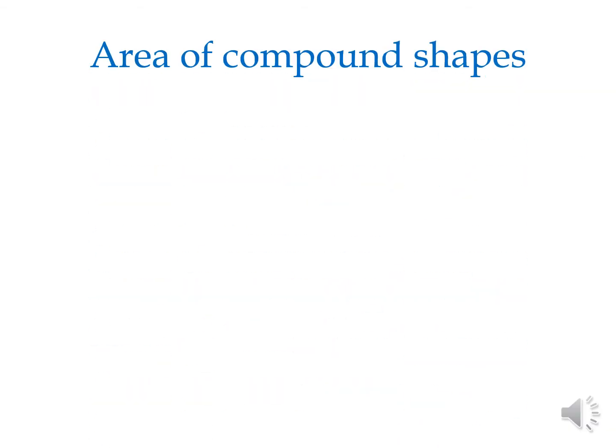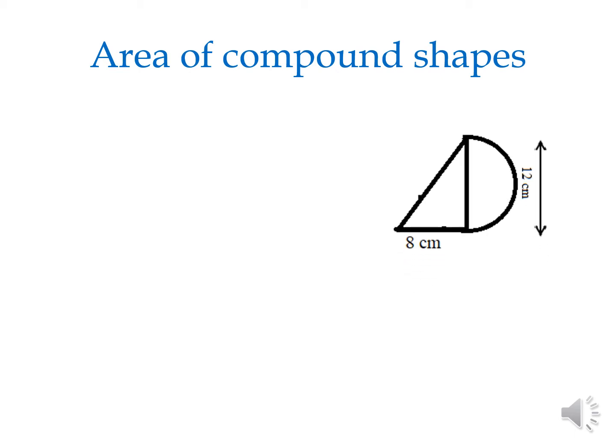Area of compound shapes. Compound shapes means two or three shapes together make a compound shape. Here we have a semicircle — a half circle is called a semicircle — and a triangle. One triangle and a semicircle joined together make a compound shape. The one end to the other end of the circle is called the diameter.